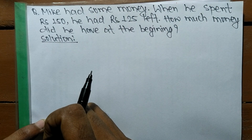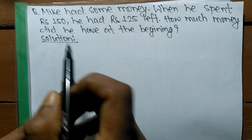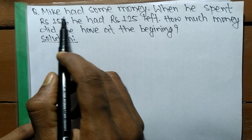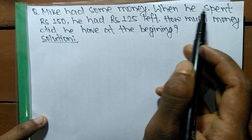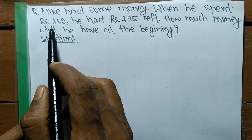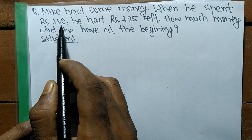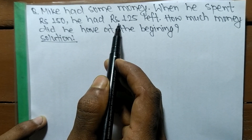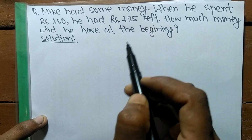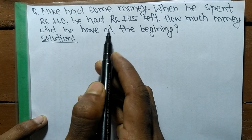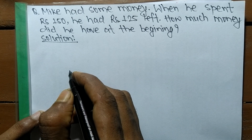Today in this video we are going to solve a word equation. The question is: Mike had some money. When he spent RG 150, he had RG 125 left. How much money did he have at the beginning?